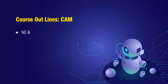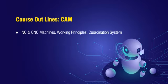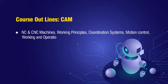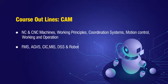The course outlines of Computer Aided Manufacturing include: NC and CNC machines, working principle of NC and CNC machines, numerical control and computer numerical control machines, coordination systems, motion control, working and operation, and advantages and disadvantages of NC and CNC machines.